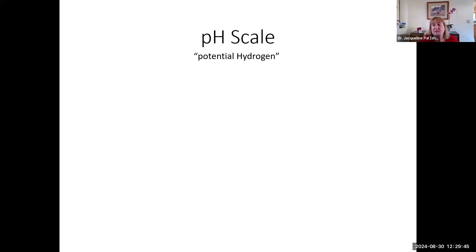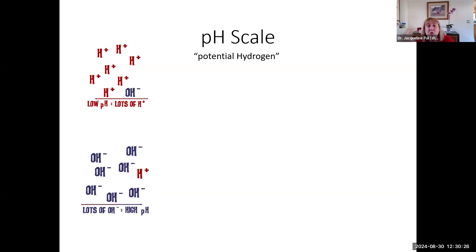We measure that on a pH scale. Notice in the word pH, it's a lowercase p and a capital H because that stands for potential hydrogen. The pH scale goes from zero to 14. At one end, we have lots and lots of hydrogens and very few hydroxides. At the other end, we have lots and lots of hydroxides and very little hydrogens. A high hydrogen content is a low pH. Lots of hydrogen ion means a low pH, and lots of hydroxide ion means a high pH.